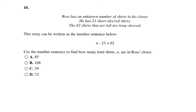The next question says Ross has an unknown number of shirts in his closet. He has 23 short sleeve shirts. The 62 shirts that are left are long-sleeved. This story can be written as the number sentence below: N minus 23 equals 62. Use the number sentence to find out how many shirts N are in Ross's closet. So all it is, is it gives you a real world context on what this equation represents and asks you to solve it.